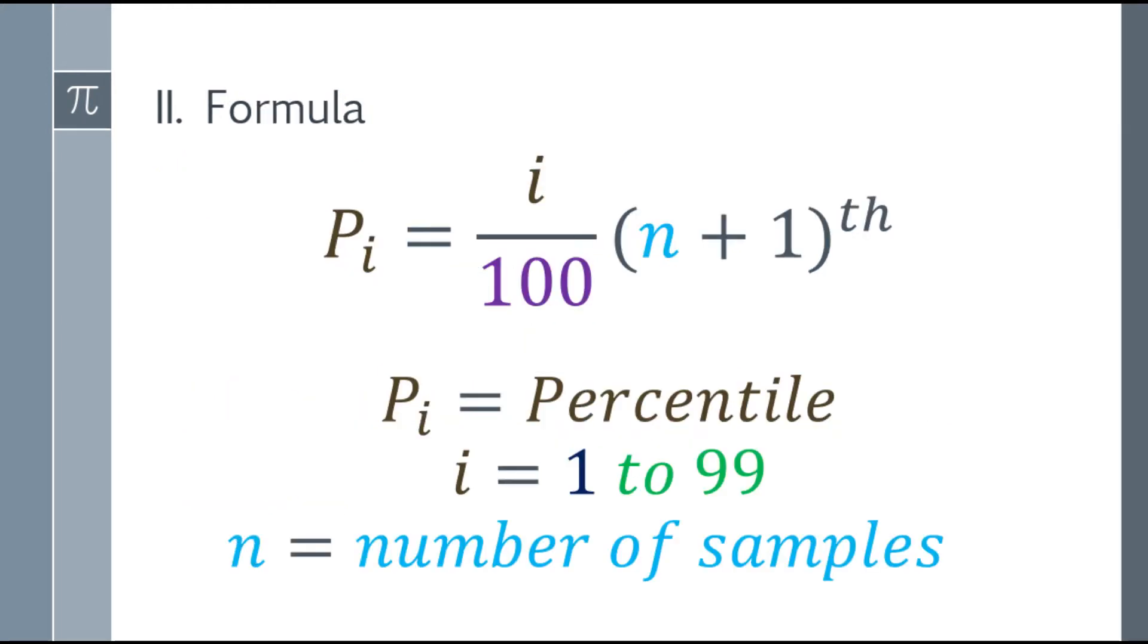So ano ba yung formula na gagamitin natin? Meron tayo dito ay i over 100, tapos multiply mo siya sa n plus 1, tapos may lagay ng TH. Remember, ang TH natin dito ay hindi variable. Yung first, second, third, fourth, and so on. Sa formula natin, ang i, that could be 1, 2, 3, hanggang 99. At ang N naman will be the number of samples. Kung ilan yung nakalagay sa samples, yung N.